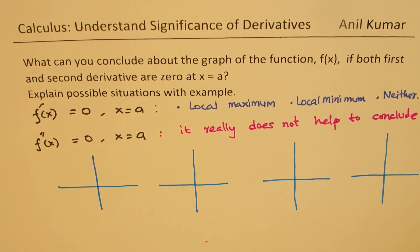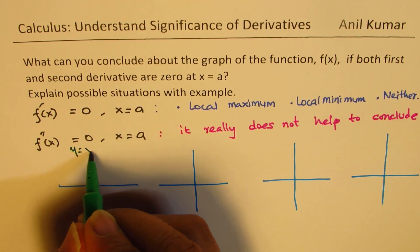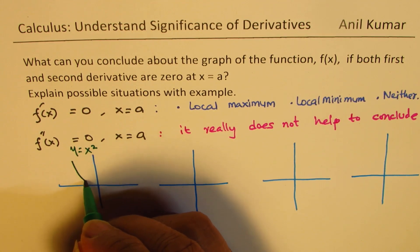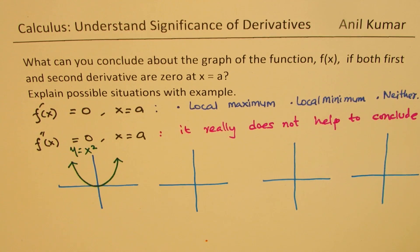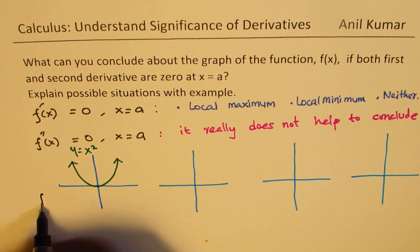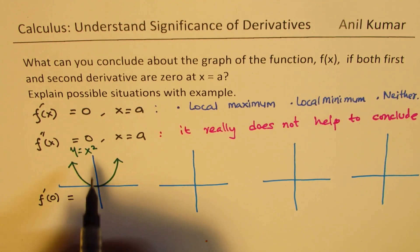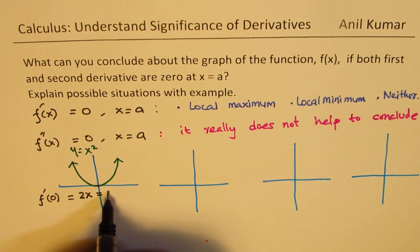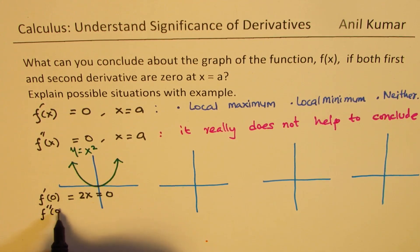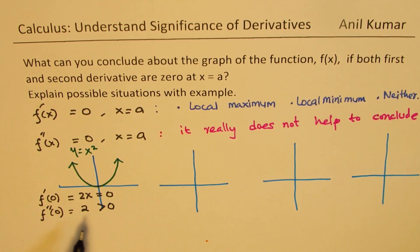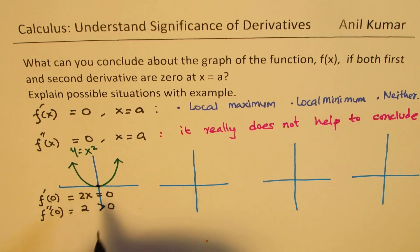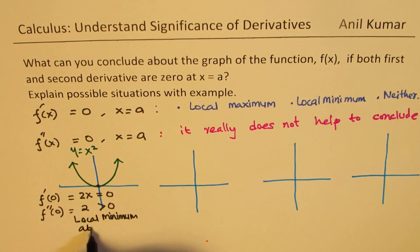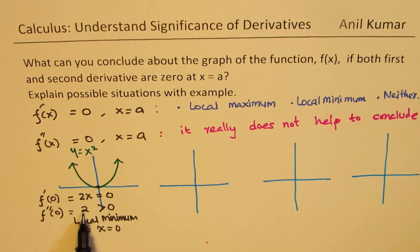Let's say we have the function y equals x squared. This graph is shaped like a parabola. The first derivative is 2x, which equals 0 at x equals 0. Since the second derivative is greater than 0 here, we have a local minimum at x equals 0. The second derivative is not 0 — it is positive — so the function is concave up and we confirm a local minimum.